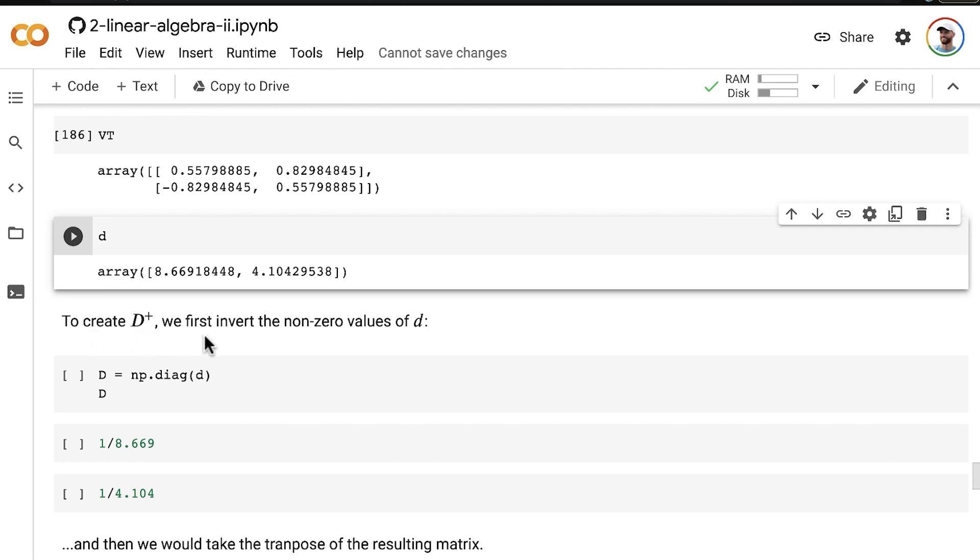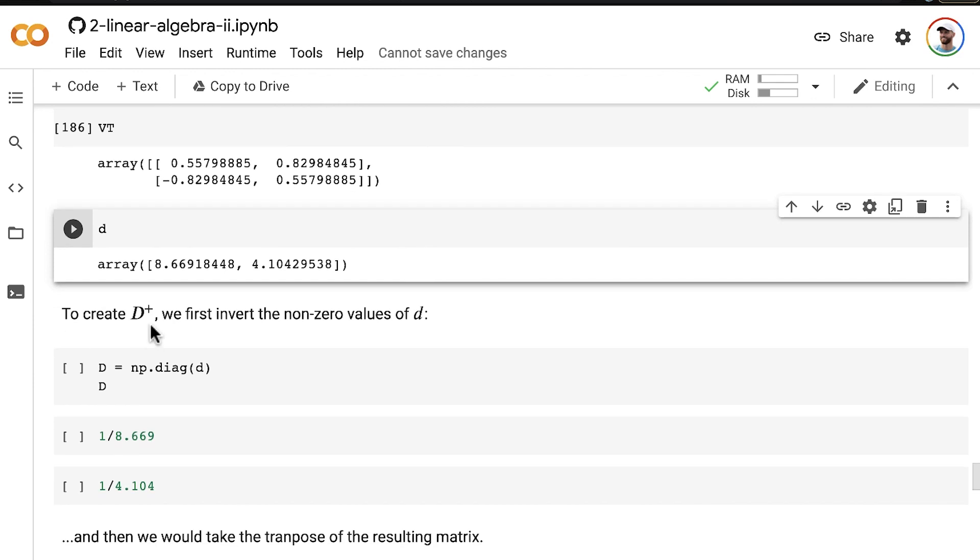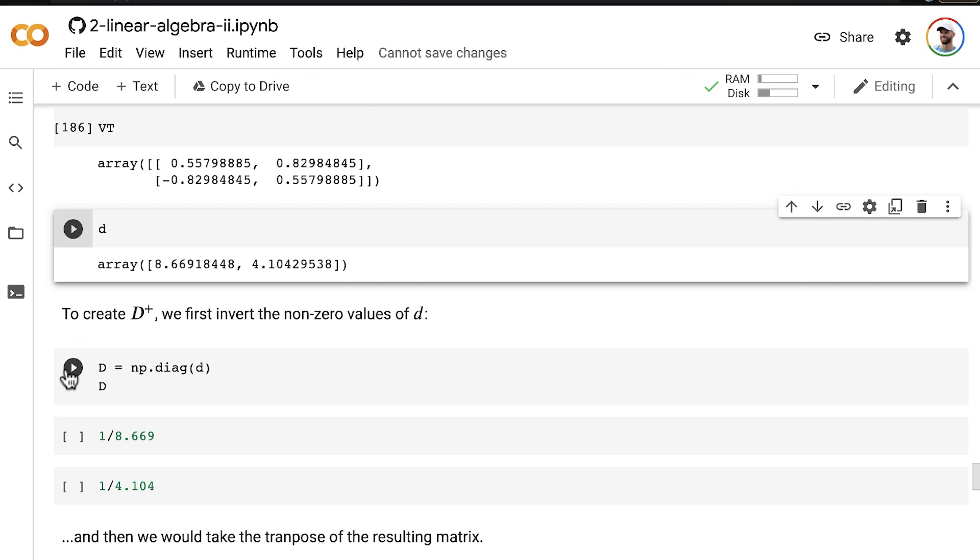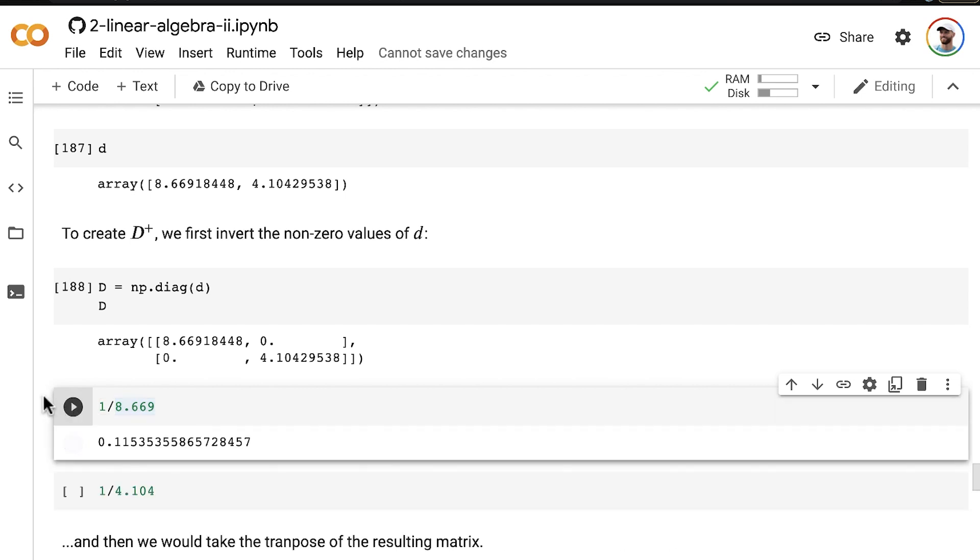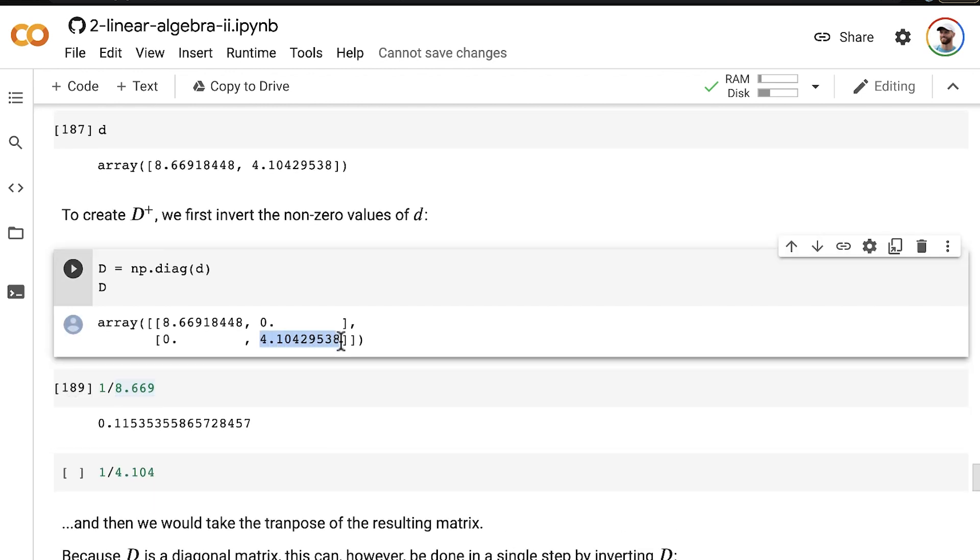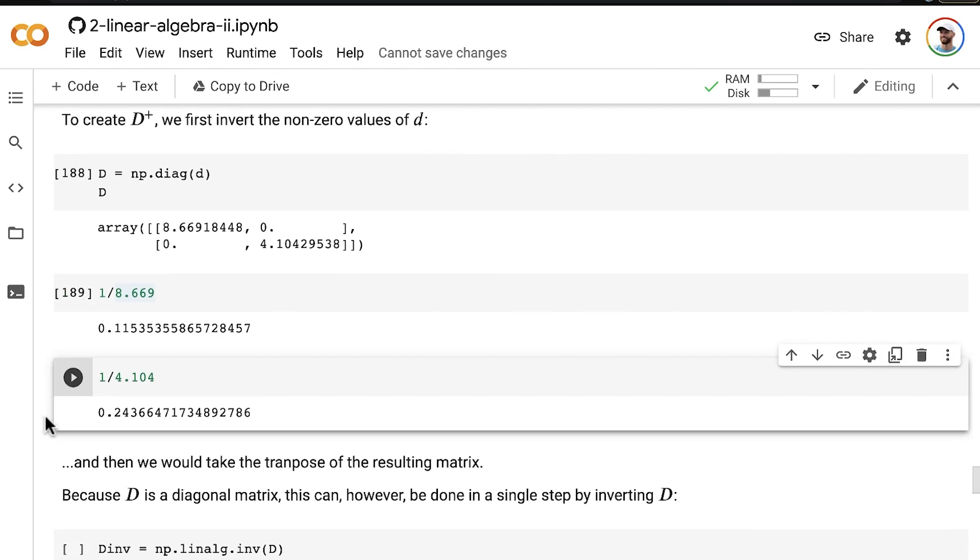To create D plus, we first invert the non-zero values of D. Remember that the matrix D, a capital D, is a diagonal matrix with the singular values, lowercase d, along its main diagonal. To invert the non-zero values of D, we could do that super manually and say, I've got this one singular value that's about 8.669, so I'll invert that. And I've got this other one, 4.104, and I can invert that. You could do that for the two non-zero values in this matrix D. And then we would take the transpose of the resulting matrix. That would give us D plus.